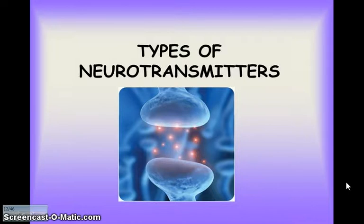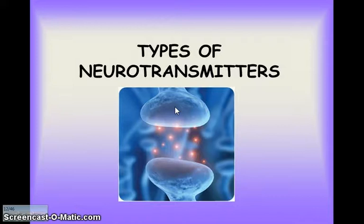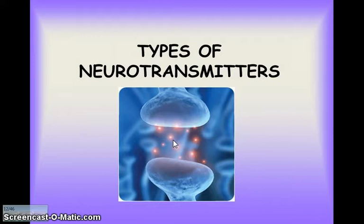When we talk about a neurotransmitter, we're basically talking about a chemical. One area here represents the terminal button of one neuron at the end of an axon, sending a chemical message through the synapse — that little gap. These chemicals are sent to the receiving dendrites of the next neuron, and it's this chemical composition in the synaptic gap that we're looking at here.